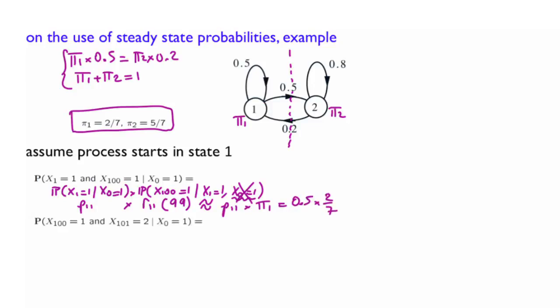Now, how about this expression? Given that you start in state 1, what is the probability that at time step 100, you are in 1, and time step 101, you're in 2? By doing the same technique, it's the conditional probability of the first thing happening, and then given that thing happening, the probability that the second one happened.